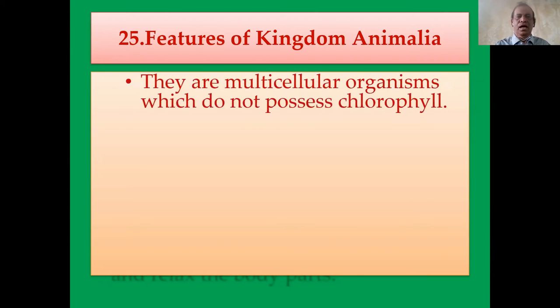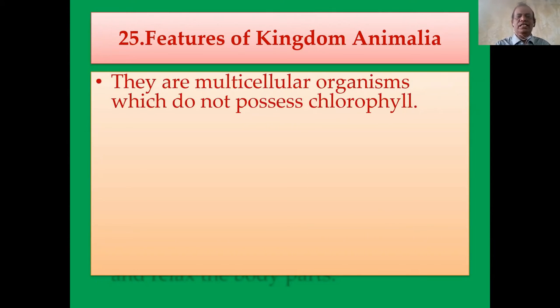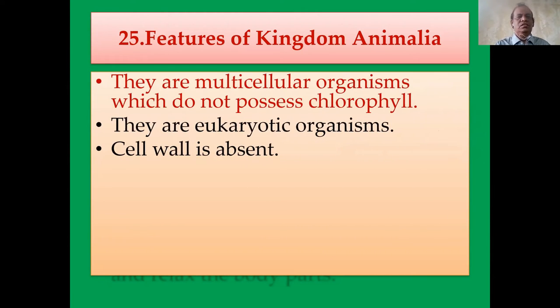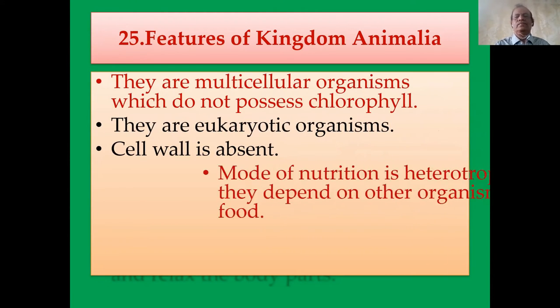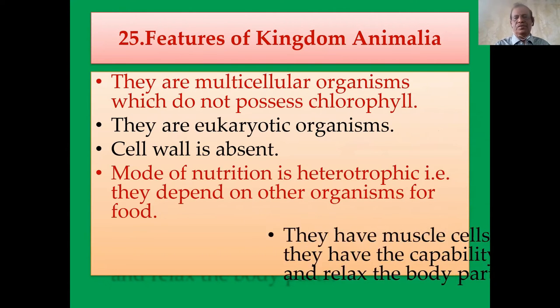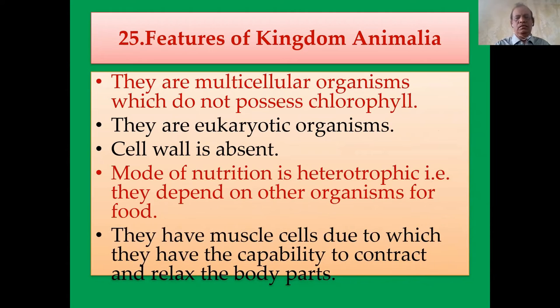What are the features of kingdom Animalia? They are multicellular organisms. They do not possess chlorophyll. They are eukaryotic organisms. Cell wall is absent. Their mode of nutrition is heterotrophic — they depend on other organisms for food. They have muscle cells, giving them the capability to contract and relax body parts for movement.